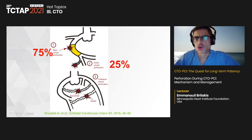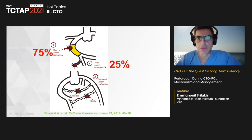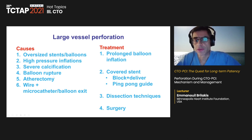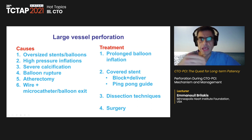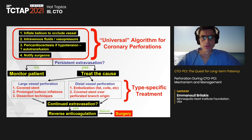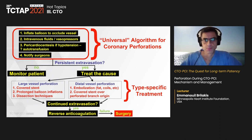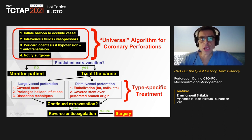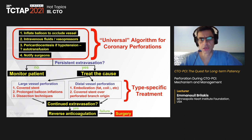Large vessel perforation causes include use of oversized balloons, high inflation pressures, severe calcium, balloon rupture, and use of atherectomy. Exiting the vessel with a wire followed by a microcatheter or balloon can also cause perforation. The management algorithm starts with a common part applicable to any perforation type: immediately inflate a balloon proximal to or at the perforation to stop bleeding into the pericardium, administer fluids and vasopressors if the patient becomes hypotensive, and perform pericardiocentesis if needed.